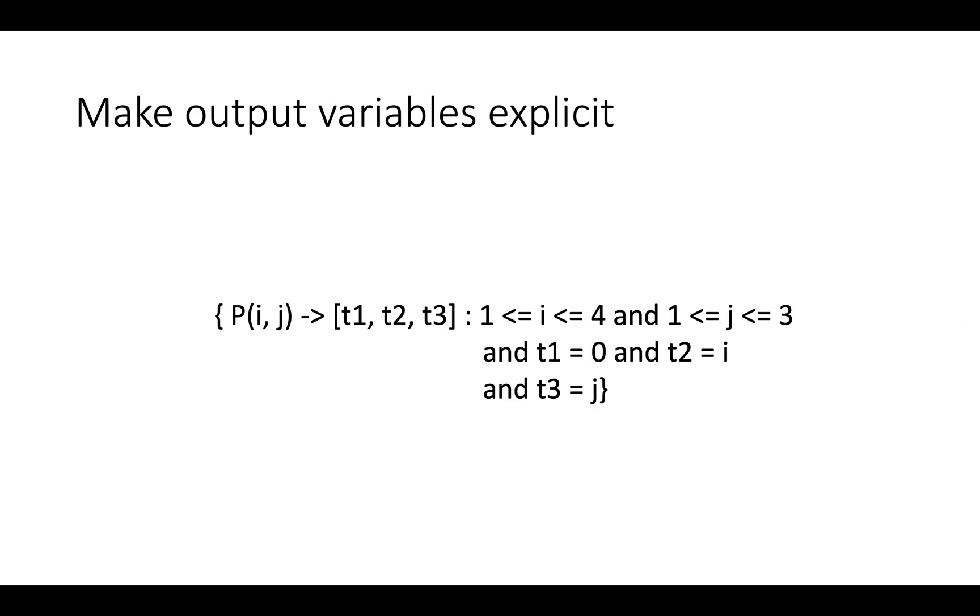Well first let's make the output variables explicit. Another way to write this in the sort of set comprehension notation is P(i,j) gets mapped to time vector [t1, t2, t3] where t1 equals 0, t2 equals i, t3 equals j, and i is between 1 and 4 and j is between 1 and 3. So basically we've just given names to all the components of the output and we've moved the definition of the function from the left hand side of this set comprehension to the right hand side.